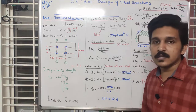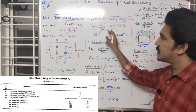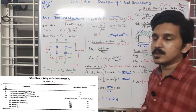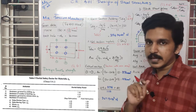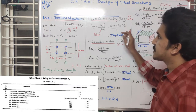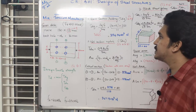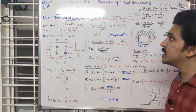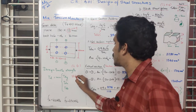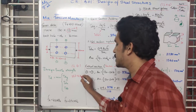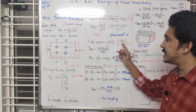Gamma M0 value for yielding is 1.1. Substituting these values into the gross section yielding equation gives TDG equal to approximately 354 kN. The second failure mode is net section rupture, TDN, from clause 6.3.3.